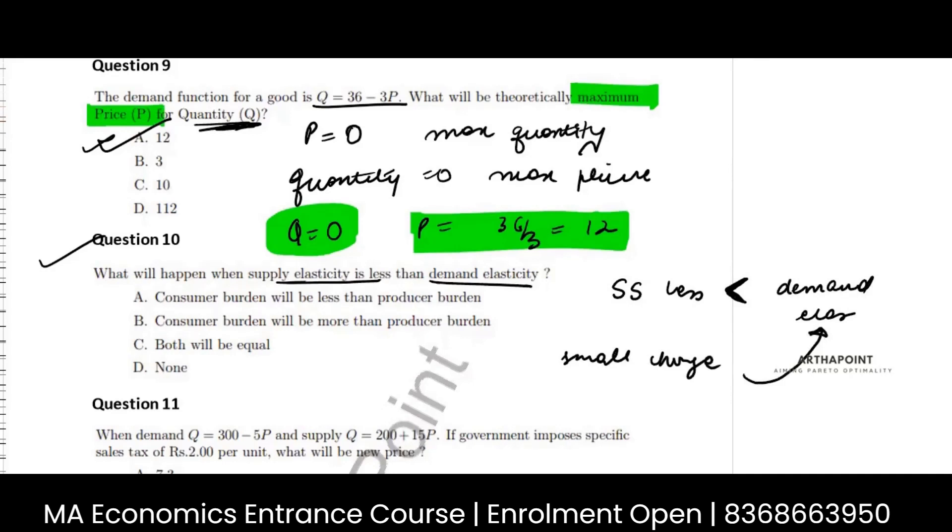So, if you will see a huge decrease in demand when you tax the consumer, you don't want to tax consumer a lot. So, consumer will bear less burden and producer will bear more burden.